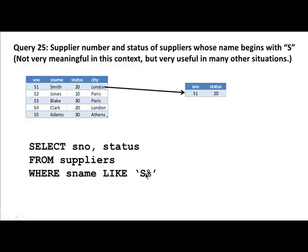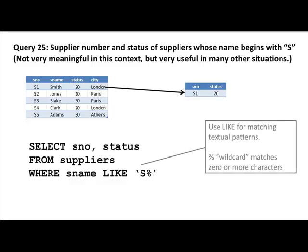The percent wildcard character matches zero or more other characters. So this will match a supplier whose name is just S, whose name is Sam, whose name is Solidarity — whatever starts with an S, that's all we care about. Because you're doing a text function, this is case sensitive. So if somebody's name starts with a lowercase s, under certain settings of the database it will not match. It's better to assume it is case sensitive and give the correct response.